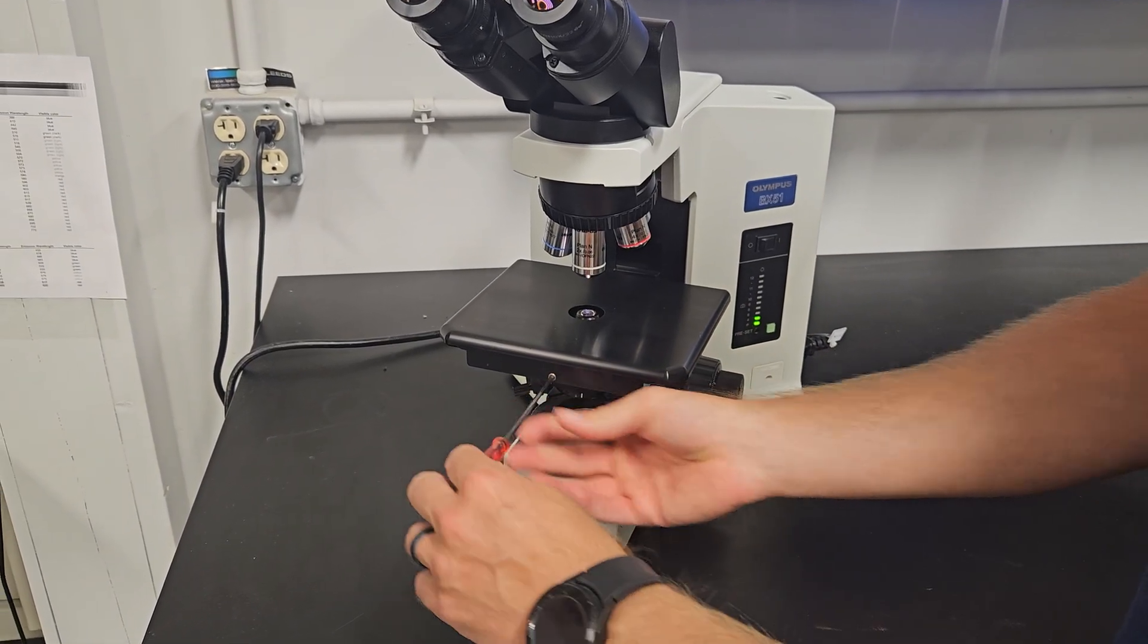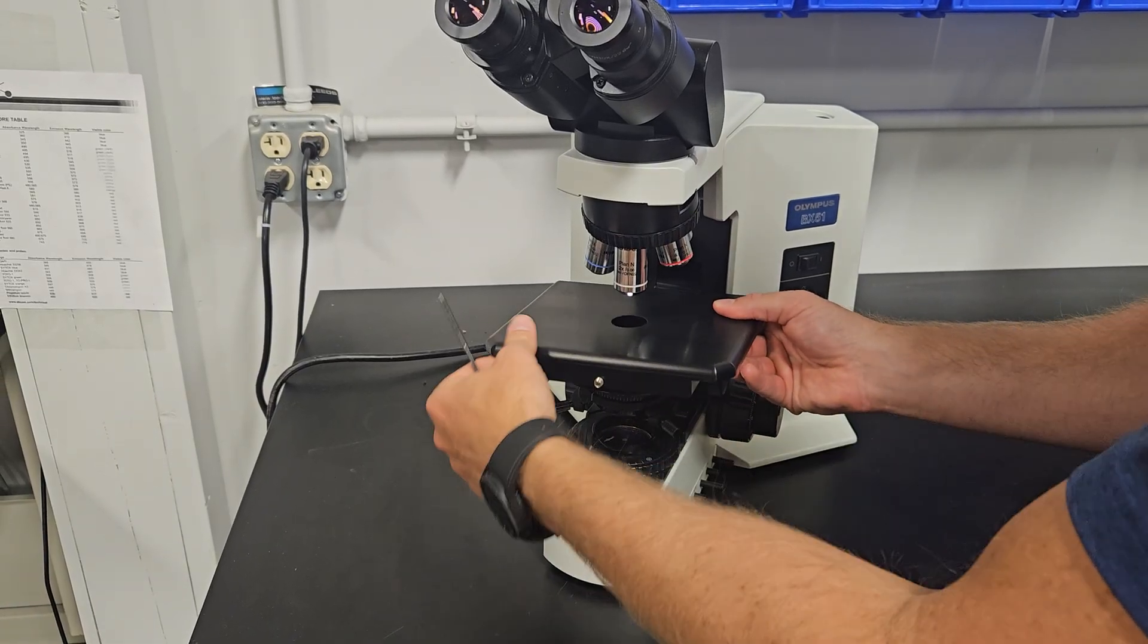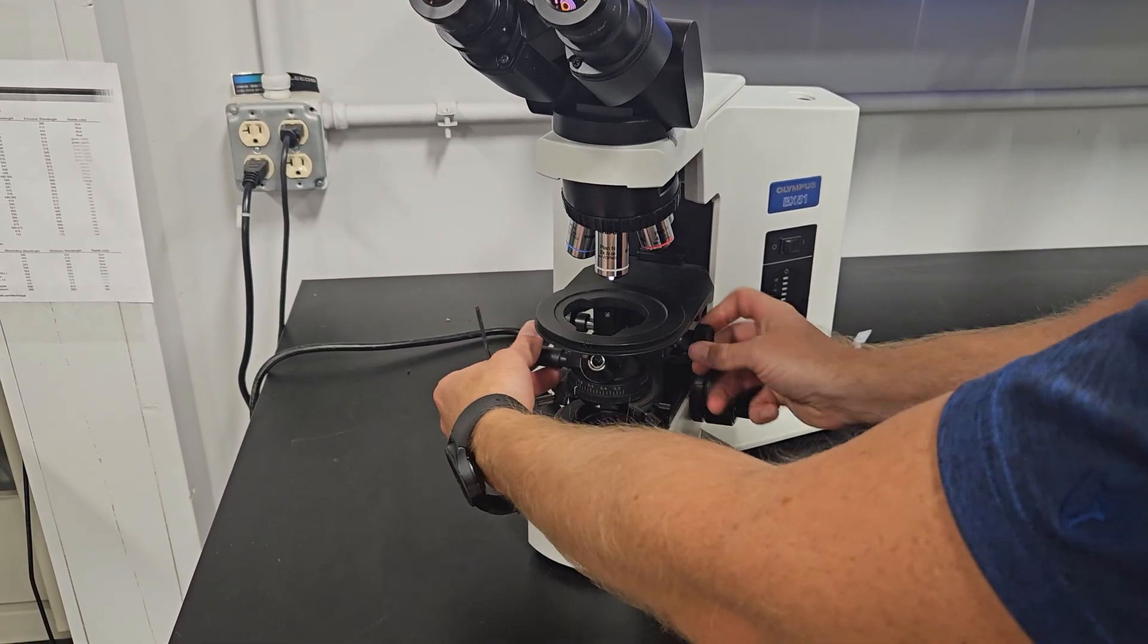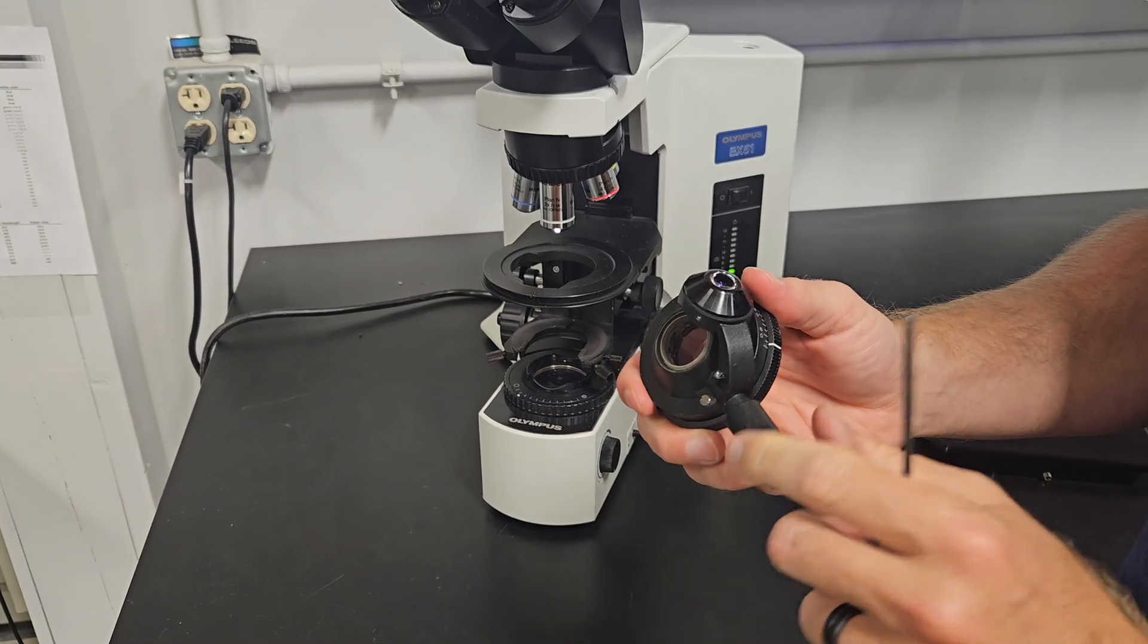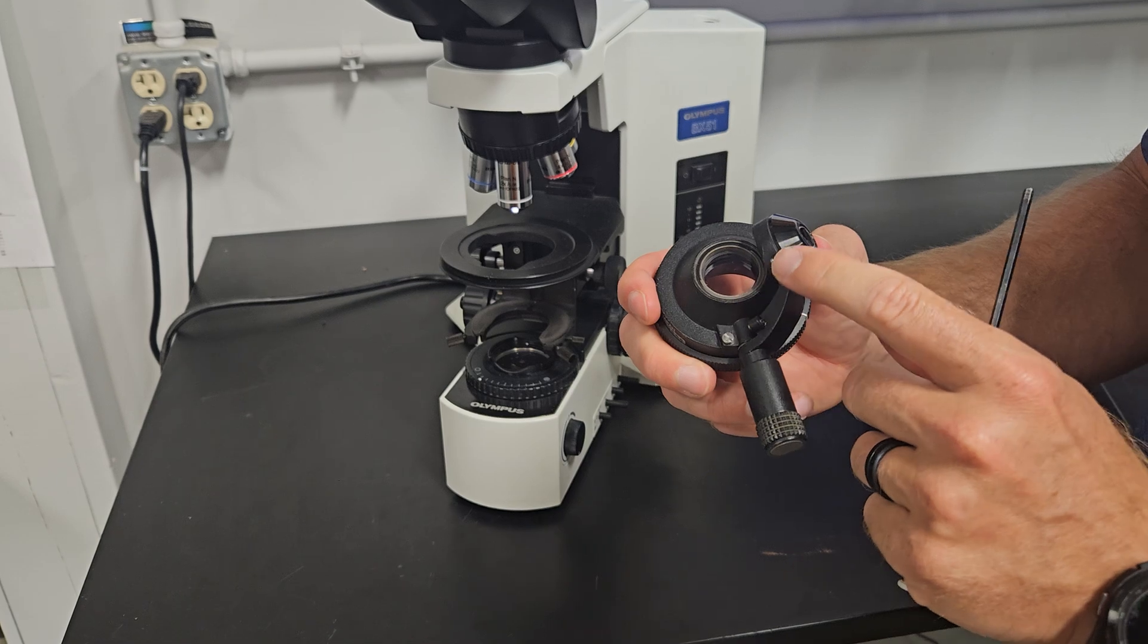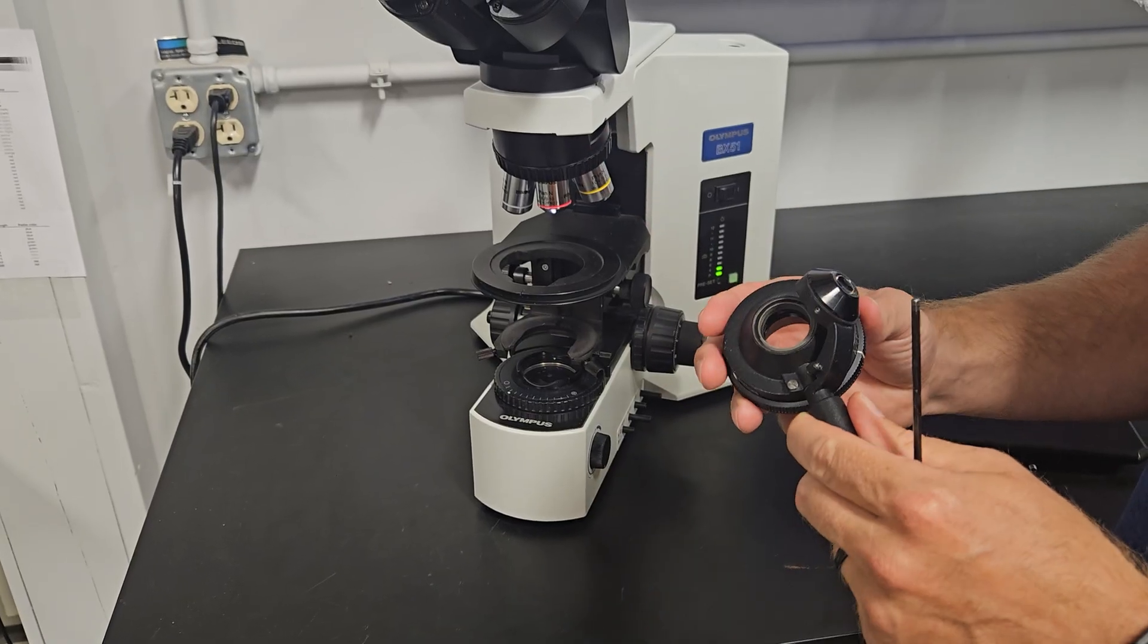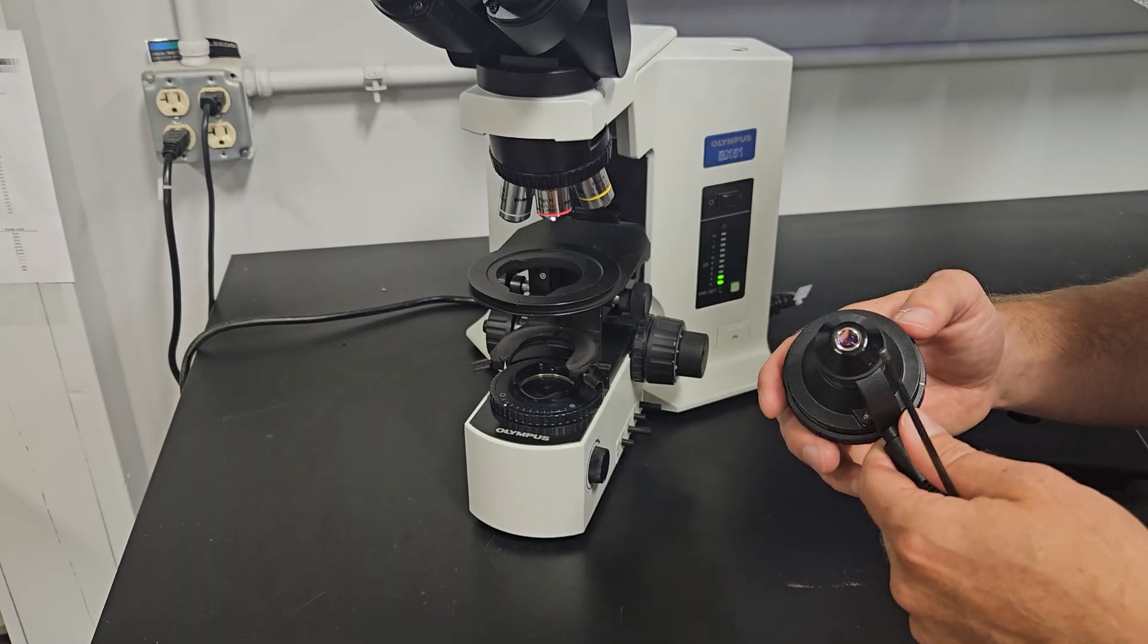We're going to take the stage off, lower it again so we don't crash it into the objectives, and we're going to flip that top lens out. Once we do that, we'll raise the stage back up, we'll lower the sub-stage condenser, and you can see that this condenser flips in and out. You're going to have the top element flipped out when you have the 2X in.